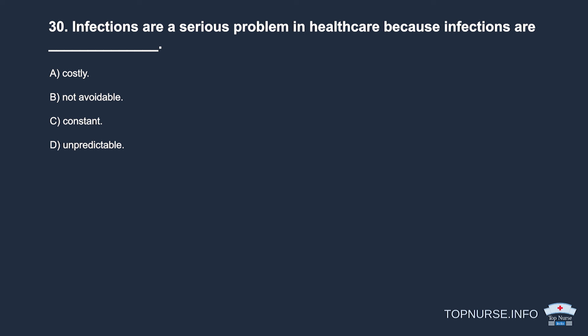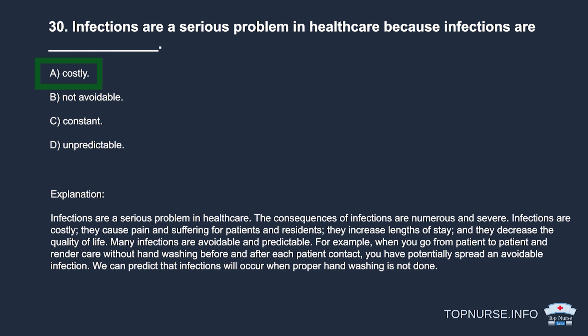Question 30: Infections are a serious problem in healthcare because infections are: a. Costly. b. Not avoidable. c. Constant. d. Unpredictable. Correct answer: a. Costly. Infections are costly, cause pain and suffering, increase lengths of stay, and decrease quality of life. Many infections are avoidable and predictable — for example, when you go from patient to patient without hand washing, you have potentially spread an avoidable infection.